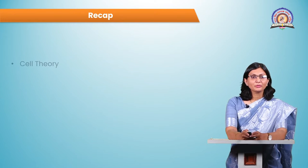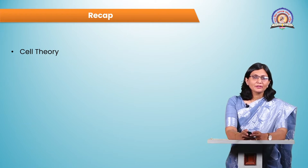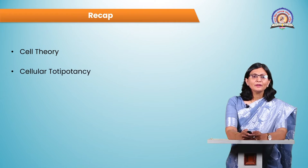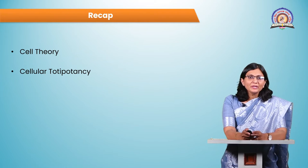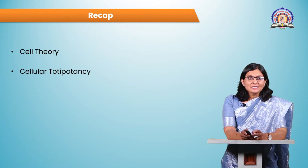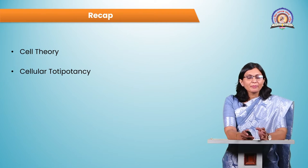Let's begin with a recap of the previous session. We discussed the cell theory — the cell is the structural and functional unit of life. Cell theory was proposed by Schleiden and Schwann. We also saw the term cellular totipotency, which means the plant cell has the ability and potential to regenerate into an entire plant.